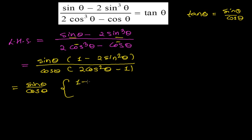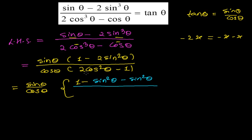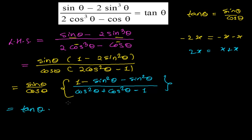Now, 1 minus 2 sin²θ — I can treat sin²θ just like x. So I can write 1 minus sin²θ minus sin²θ. Similarly, 2 cos²θ I can write as cos²θ plus cos²θ minus 1. So I am writing tan θ times this remaining fraction, and at any cost I have to prove this remaining part equals 1. If it equals 1, then 1 times tan θ equals tan θ, which is the right hand side.